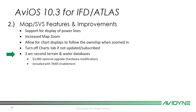Three arc-second terrain and water databases — this is one feature we're really excited about. There is a hardware modification available as an upgrade where you get a much clearer terrain database — we're calling it three arc-second HD terrain. It's an optional upgrade at $3,000; the IFD has to come back and we'll modify it. Importantly, if you purchase TSO TAWS or HTAWS, the three arc-second HD terrain upgrade is included with that purchase.